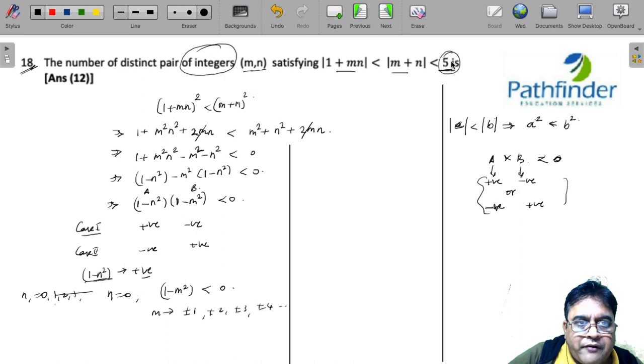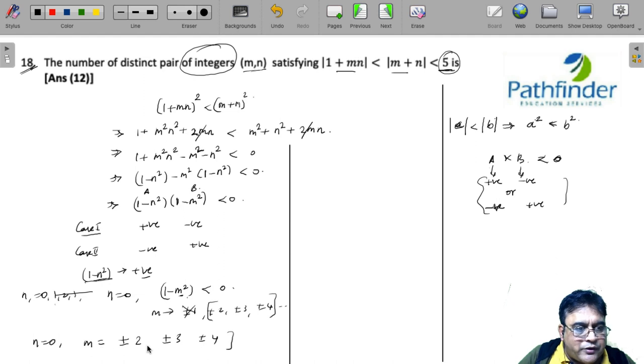But since we also have a right hand limit less than 5, I cannot have m as 1 because if I put m=1, then 1-m² will reduce to 0. So the only possible values of m are ±2, ±3, ±4. In case 1, we get n=0 and there are 6 values of m.